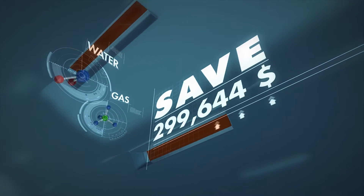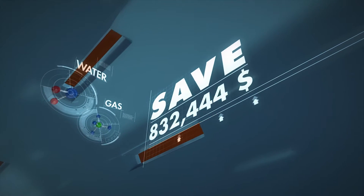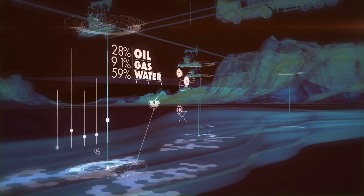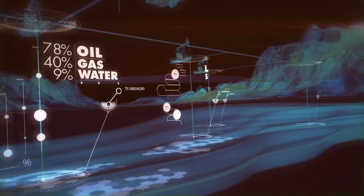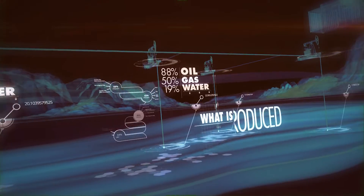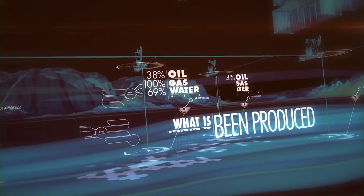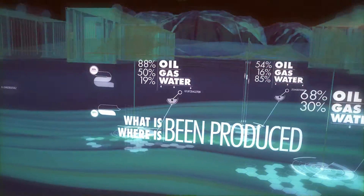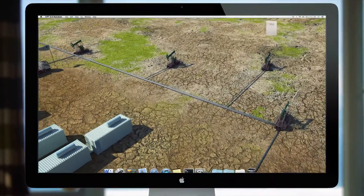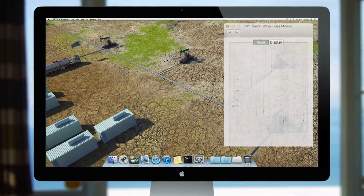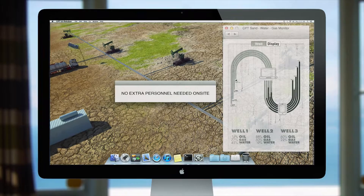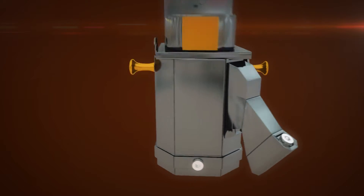This could save operators millions of dollars a year. Our Slotted 2.0 solution allows our clients to have control over what is being produced and where it is being produced. This is an efficient extraction and monitoring system that allows for influx monitoring directly from the surface without extra personnel on site.